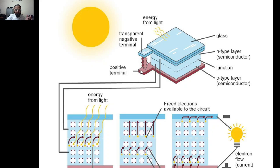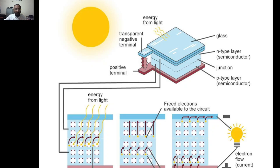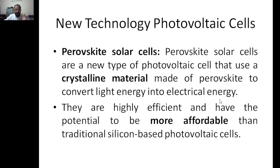In a solar panel, there is an n-type and p-type layer junction. When photons are absorbed by the solar cell, electrons gain energy and move from the valence band to the conduction band, producing electrical energy. This electrical energy can be utilized and stored.